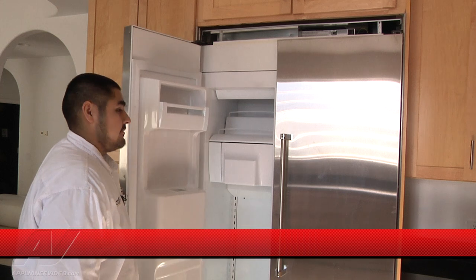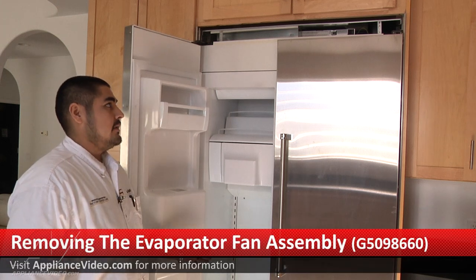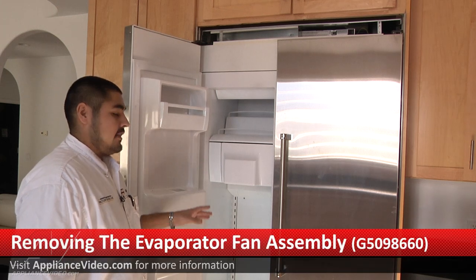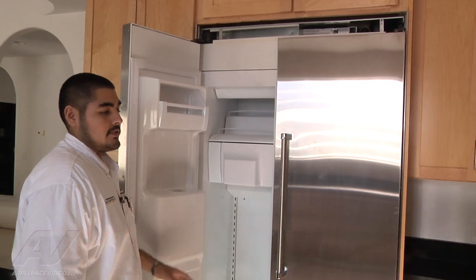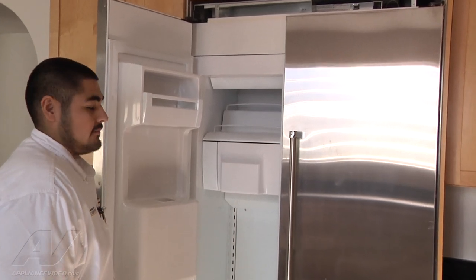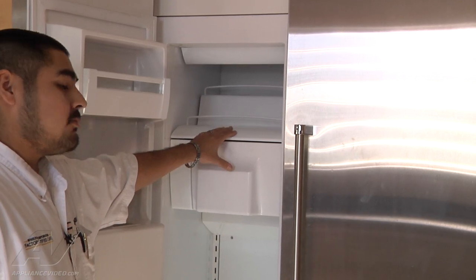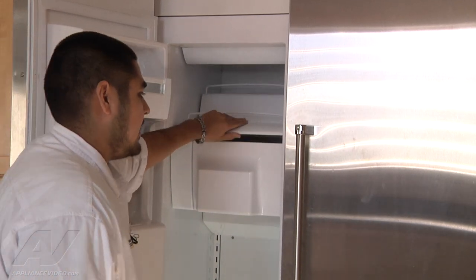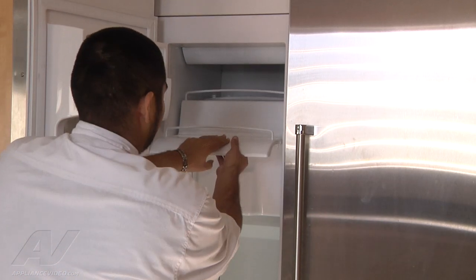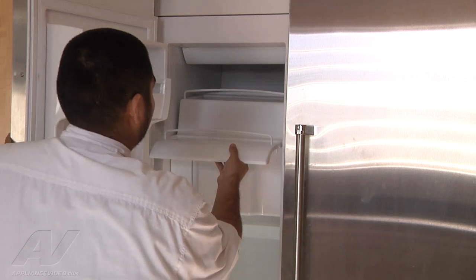The evaporator fan motor that we're replacing today diverts the cool air to the fresh food section with the help of the axial fan motor, which is located in the right hand corner. To begin the repair, we want to remove the ice bin cover as well as the ice bin. To remove the cover, just lift up and pull out. Sometimes you want to angle it out because the door doesn't open all the way.